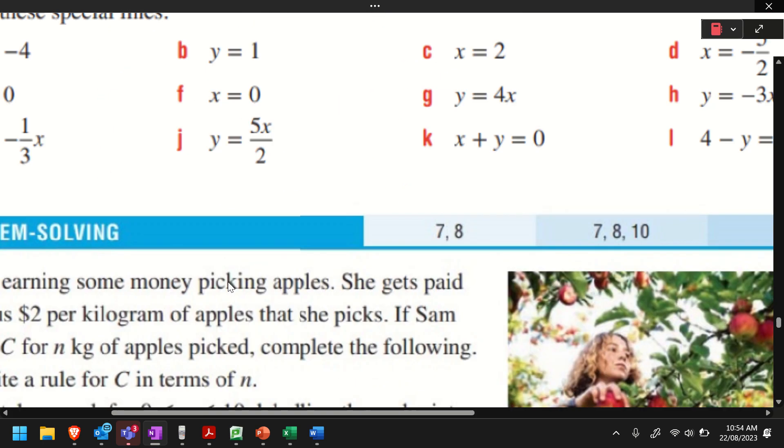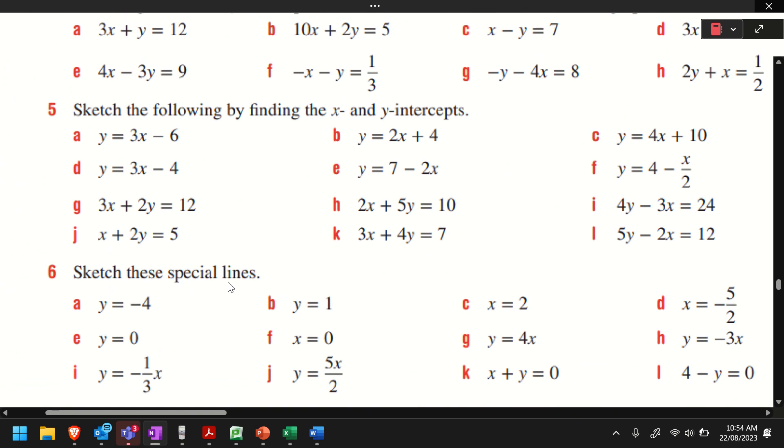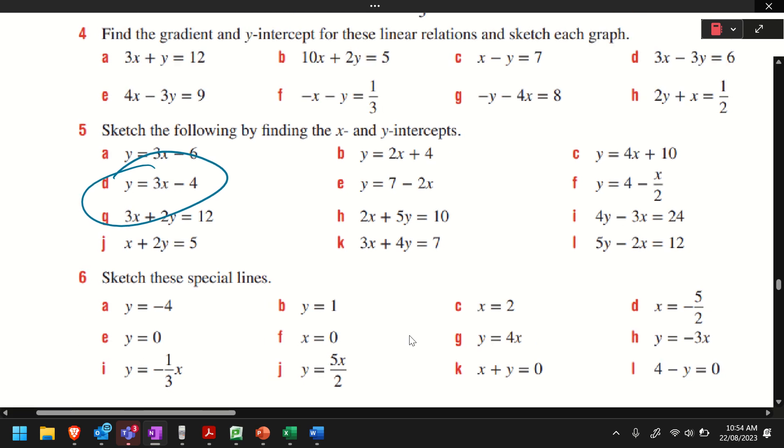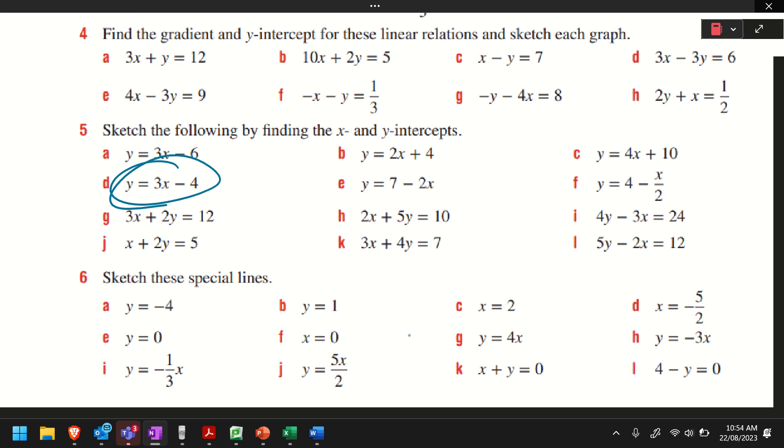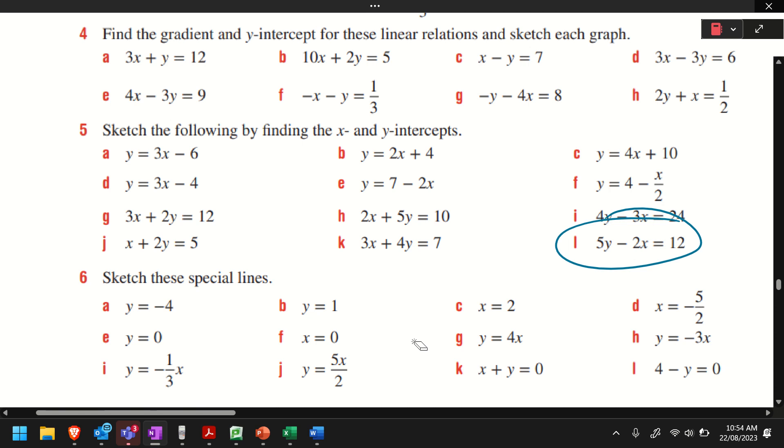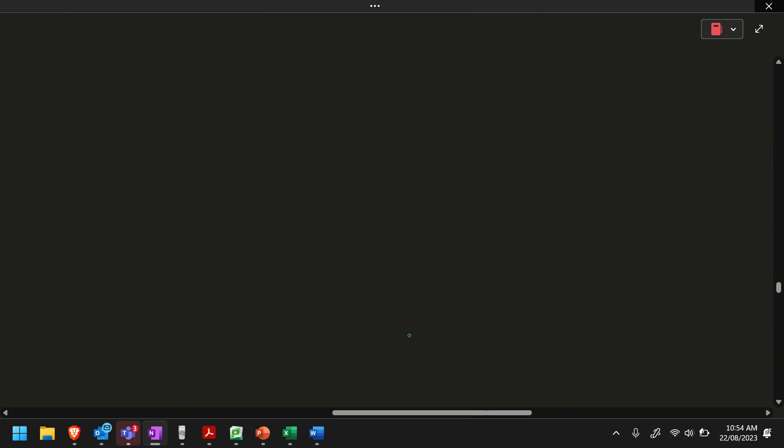Alright, I'm gonna do one more question from 6. Sorry, from 5. Pick one question. Anyone? D? This one here? Alright, so 3x minus 4. Okay. Actually, can I pick another one? Because you guys, this one's easy. If you've got a question like this, you can graph it, yeah? G or L, I'll do... Let's do L. Okay, how about that? 5y minus 2x. Let's do that one. 5y minus 2x equals 12. Thank you.